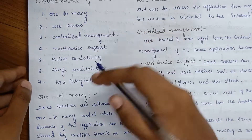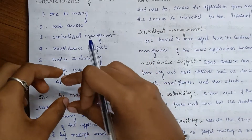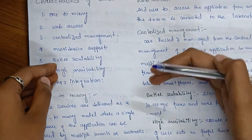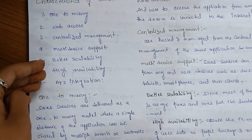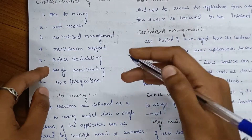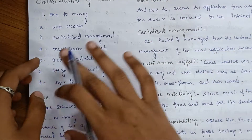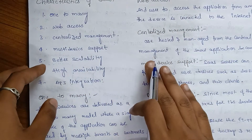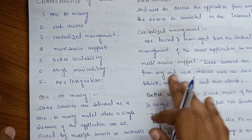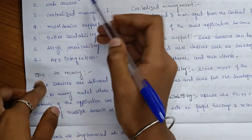First, write 'Software as a Service,' then the aim, then the services provided, then explain the characteristics. This approach shows a clear understanding and a good impression of overall knowledge of Software as a Service. So let's get into the topic — the characteristics of SaaS.